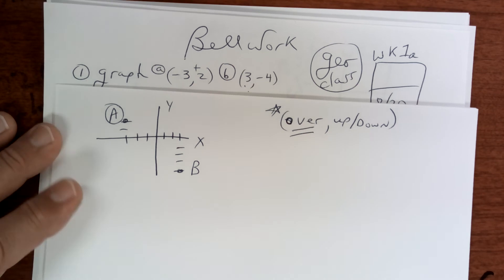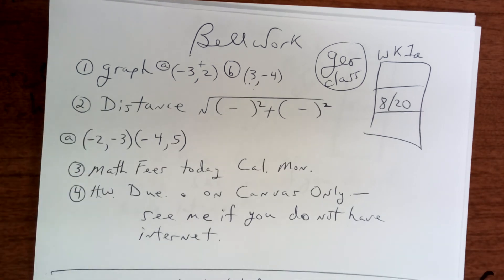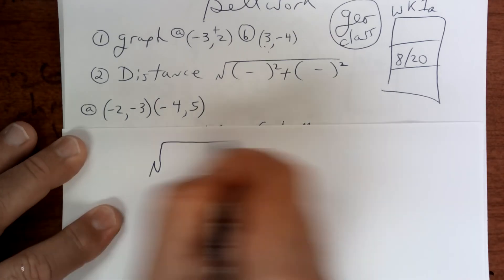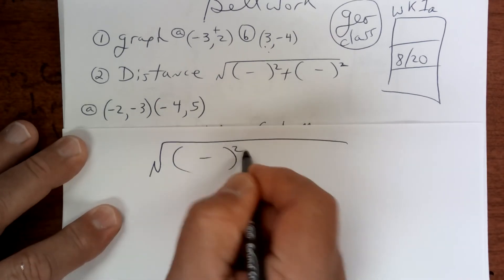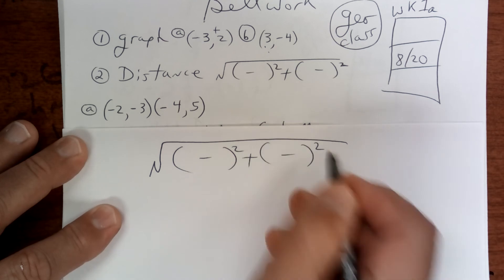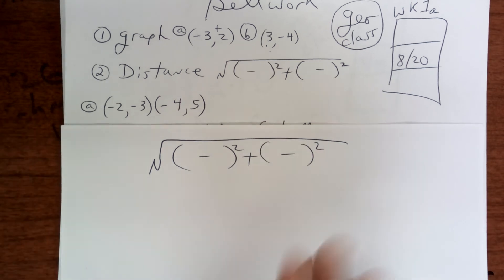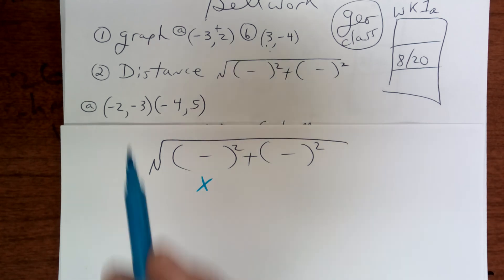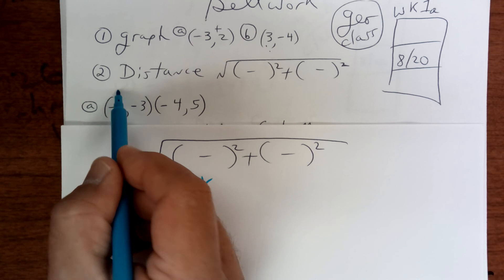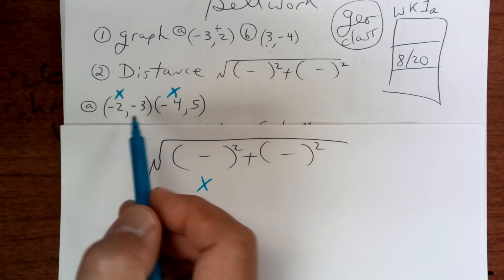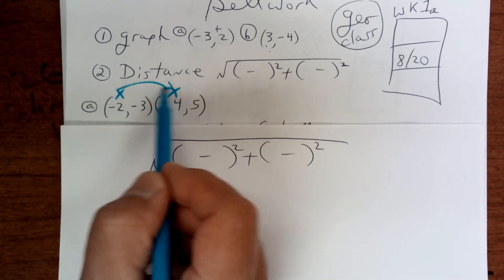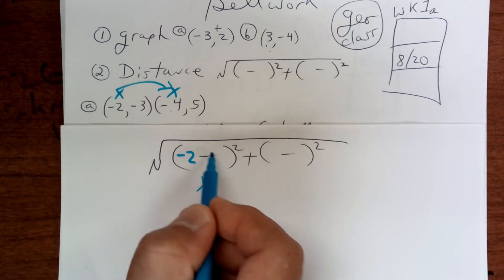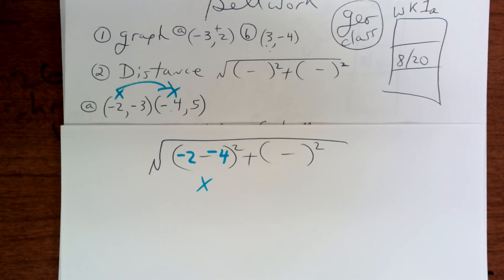Next, the distance formula. Write this down and memorize it exactly like this. Your X is the first coordinate. Those are your X's, and it doesn't matter which one you start with, but I'm going to go this way: negative 2 and negative 4.